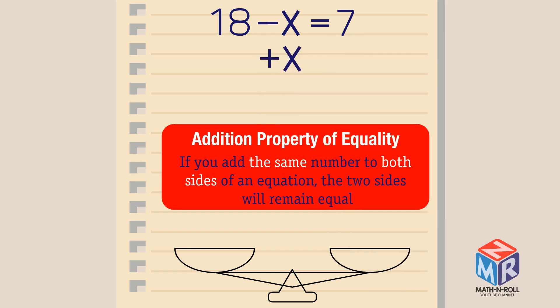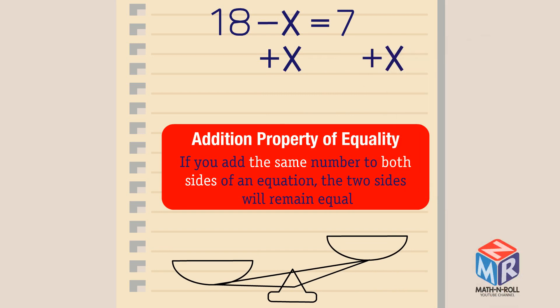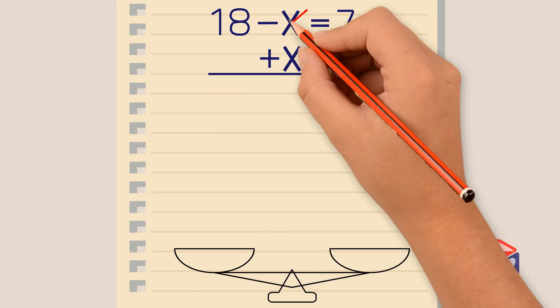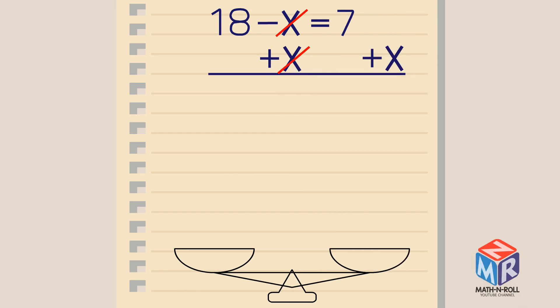In this problem, we will be adding the variable on both sides, because the equation gives us a negative x value, but we are looking for the positive x value. We cancel out, and we are left with 18 equals 7 plus x.